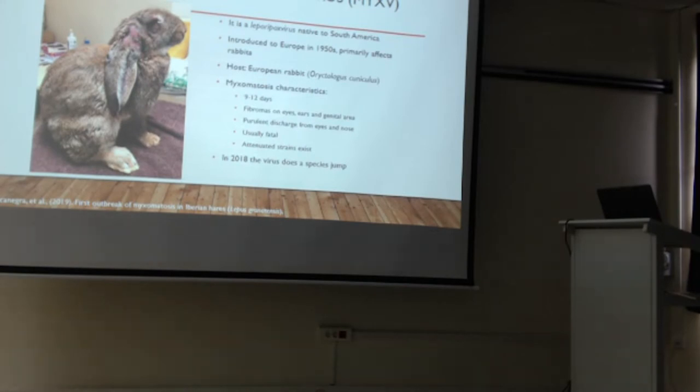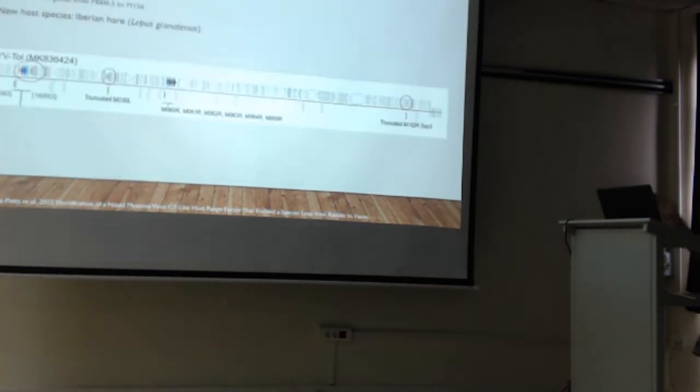However, a few years after its introduction, something very interesting happened where genomic mutations gave rise to attenuated strains. Once these strains develop, the genome remains stable. That is, until 2018 when there was a species jump discovered. Now, to understand this species jump, I'm first going to tell you a little bit about what the genome of classical myxoma looks like.